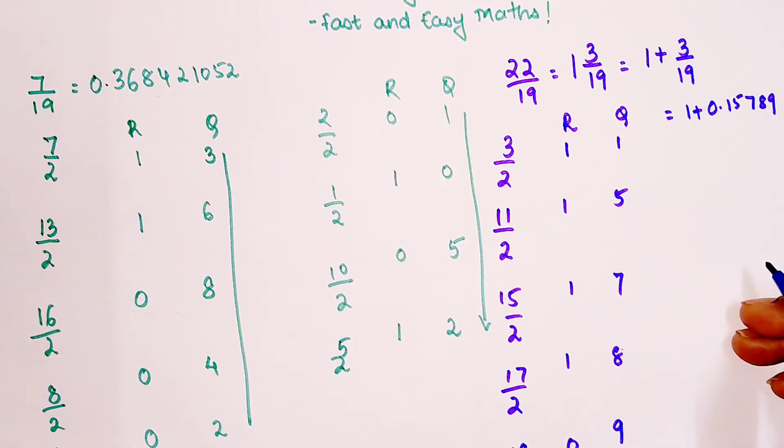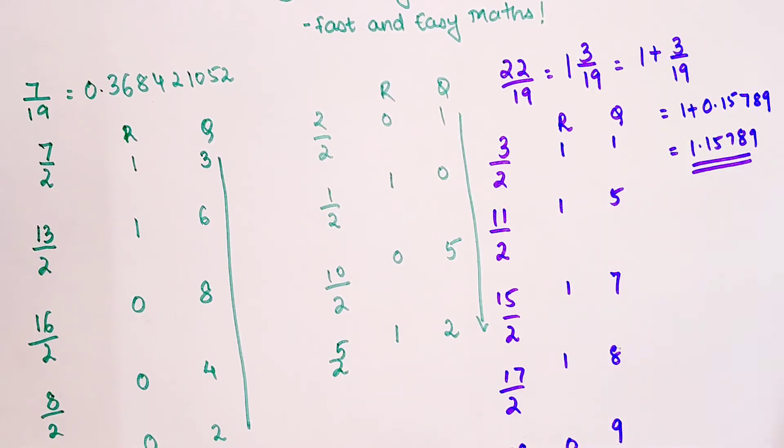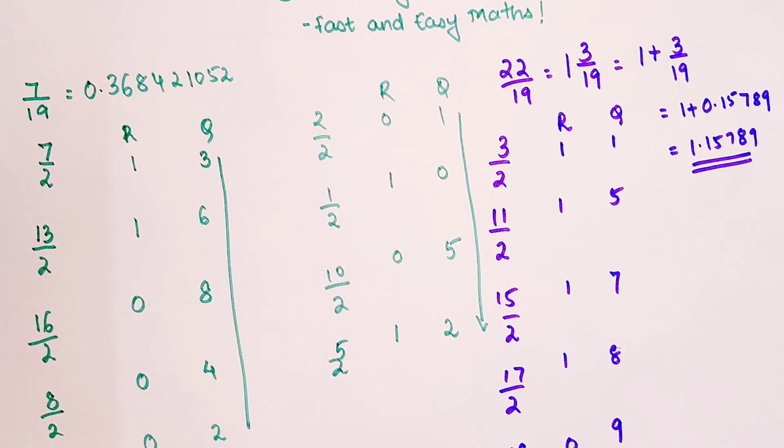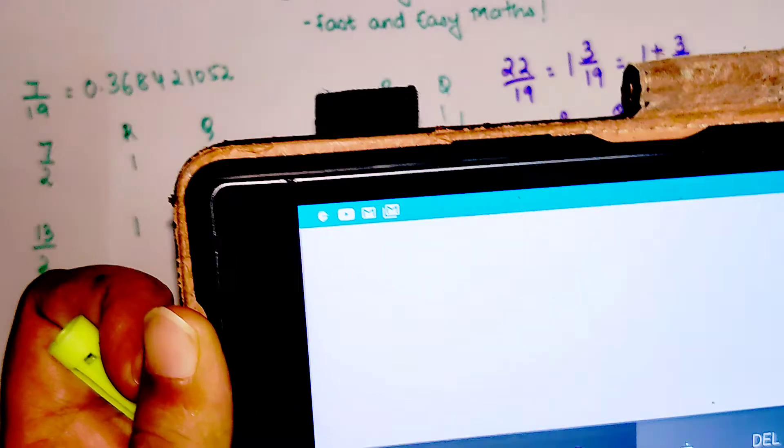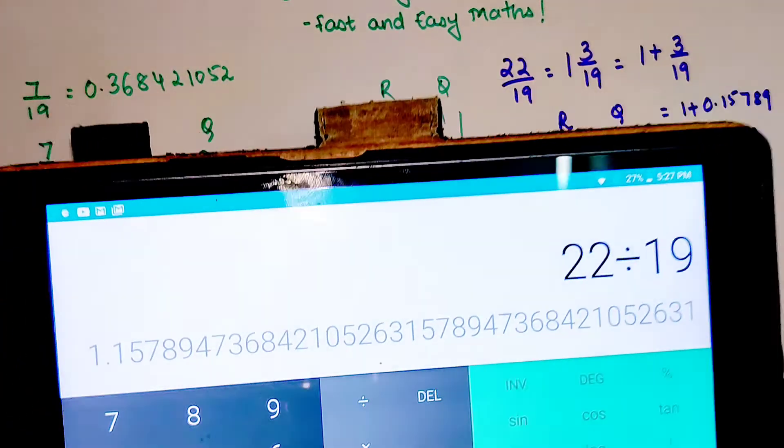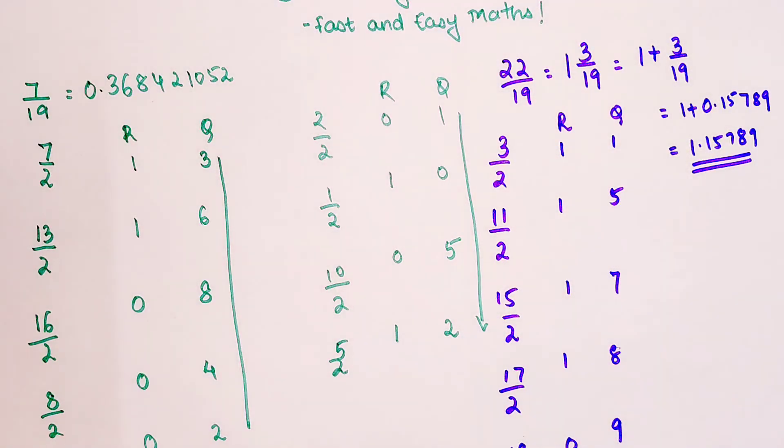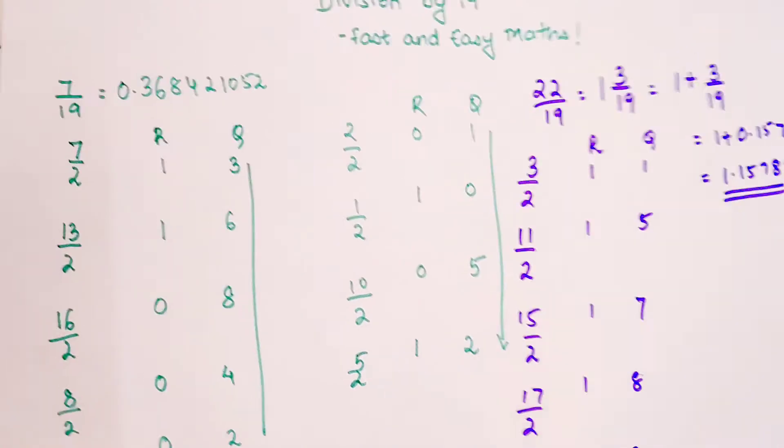I can write this as 1 plus 0 point, because 3 is again smaller than 19, so this is 1, 5, 7, 8, 9. Your final answer is 1.15789. If you want, you can check with the calculator. Let's see, 22 divided by 19, the answer is 1.15789, and so on.